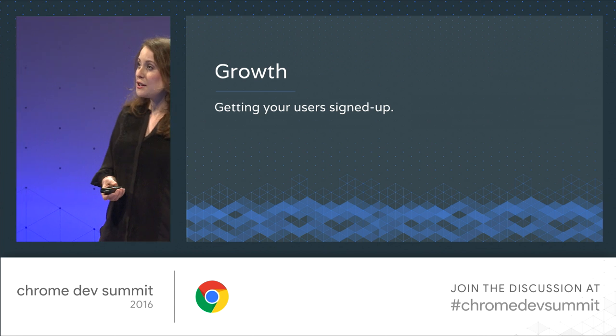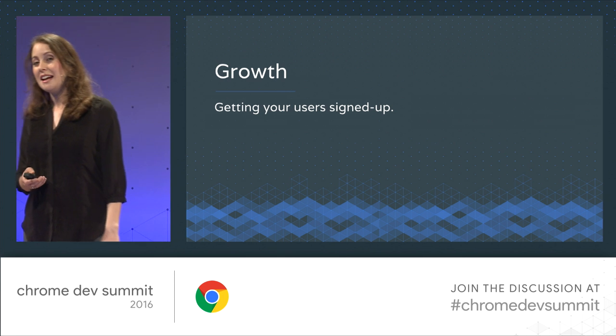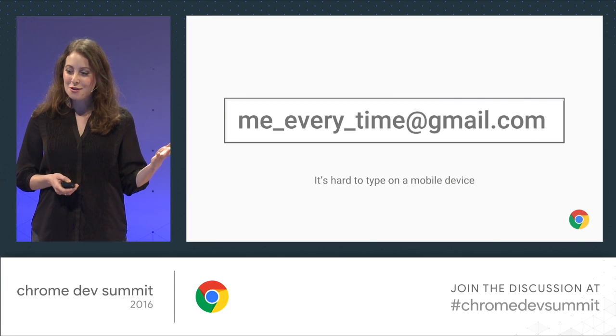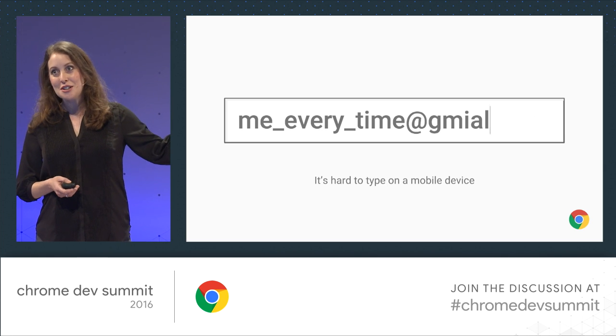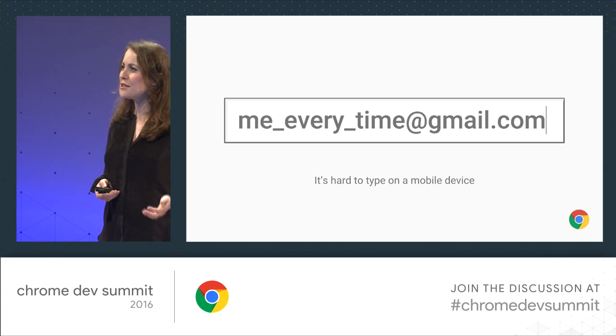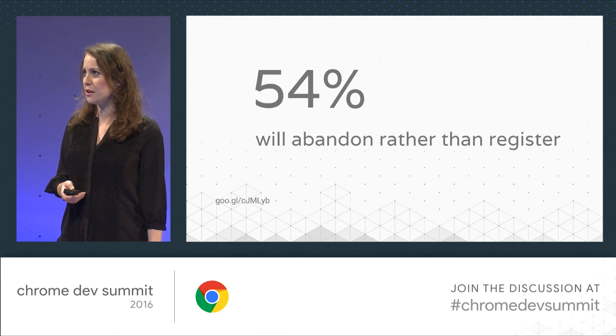But the first step, of course, is getting users signed up. And we all know entering all your information in long registration forms can be super frustrating. This is how it looks like each time when I enter my credentials on my phone. And the stats also confirm this — about half of users would rather abandon a service than go through another registration form. So we have a huge opportunity here to reduce friction in your sign-up flow and really drive growth and conversions. And let Chrome help you do this.